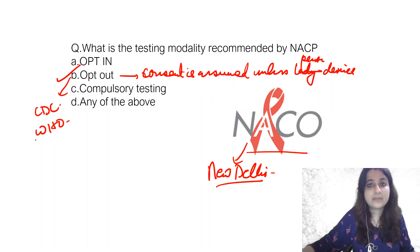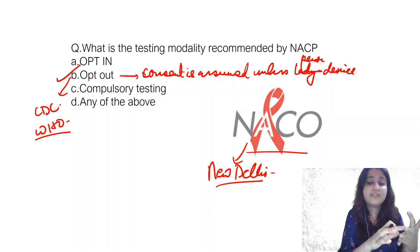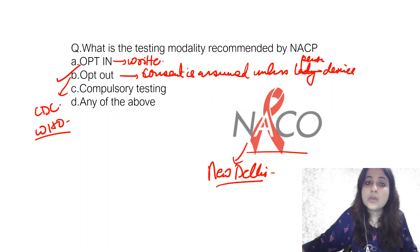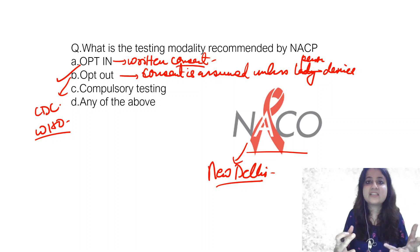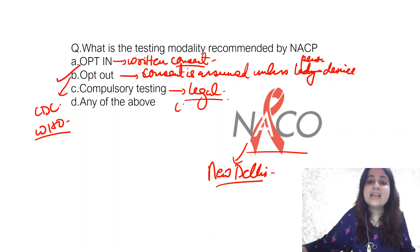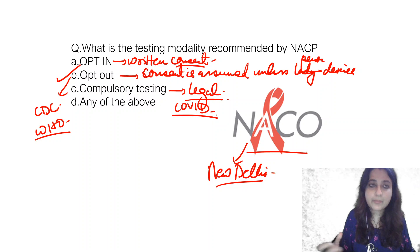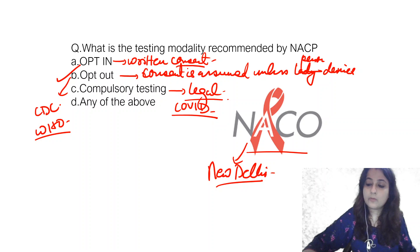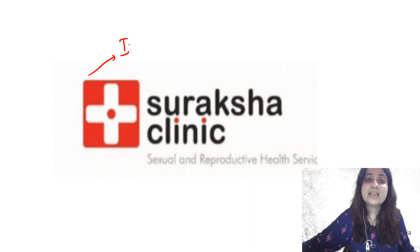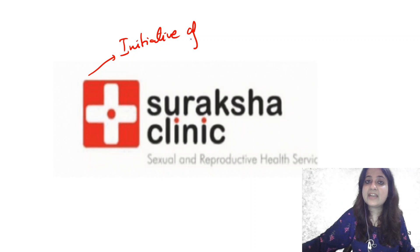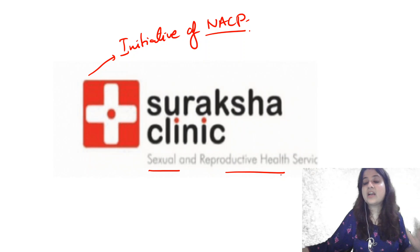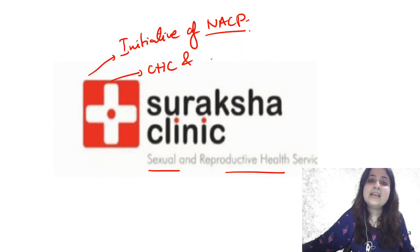Opt-in testing requires written consent — the person has come to get themselves tested and written consent is needed. Compulsory testing is where we are bound by law, like COVID testing at the airport. The National AIDS Control Program is currently under Phase 4. Suraksha Clinics are an initiative of the National AIDS Control Program — not the Ministry of Health and Family Welfare. They promote sexual and reproductive health services and are located at CHCs and above levels, offering diagnostic, care, and preventive services. There must be a dermatologist available.